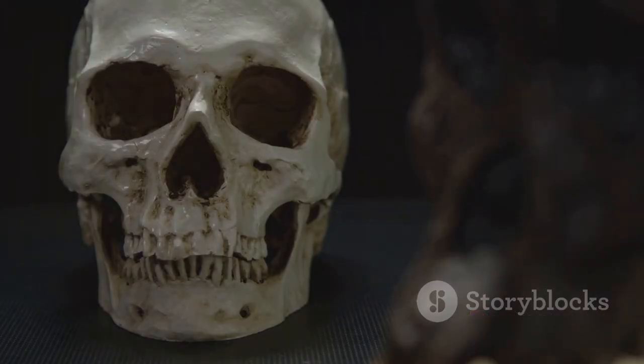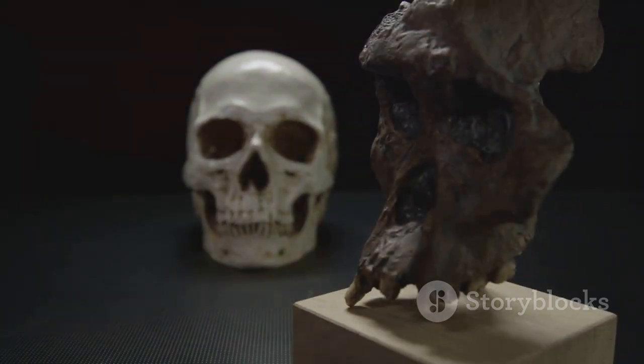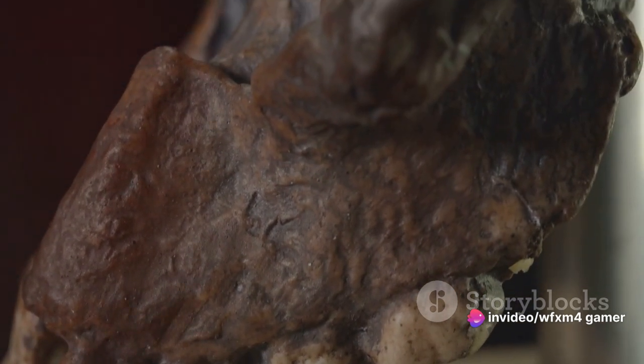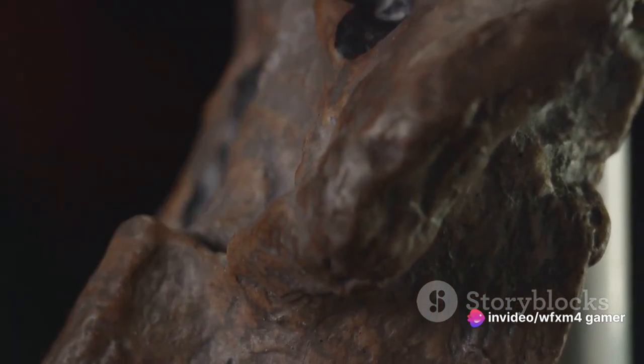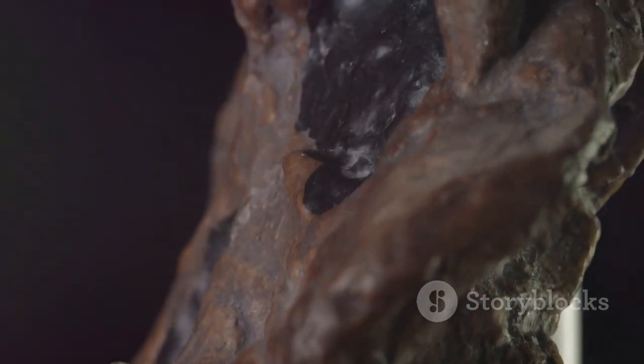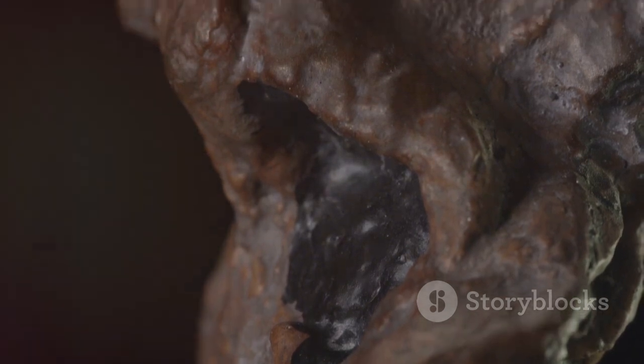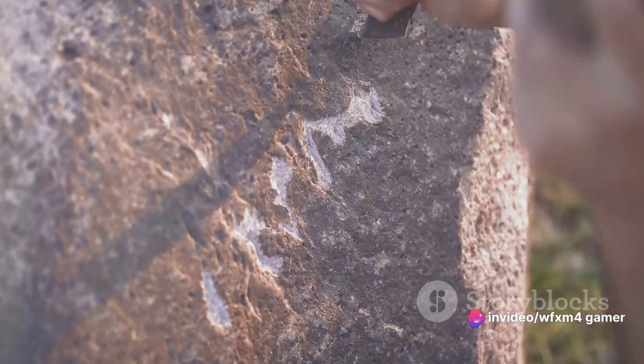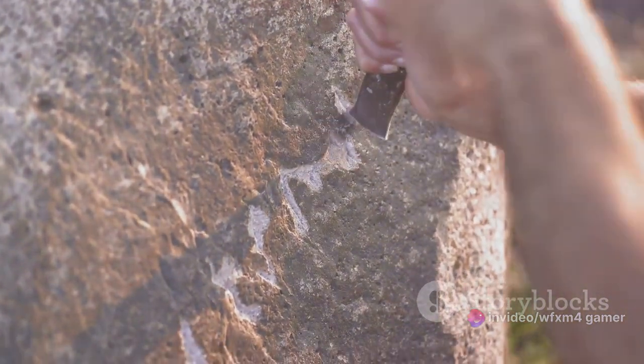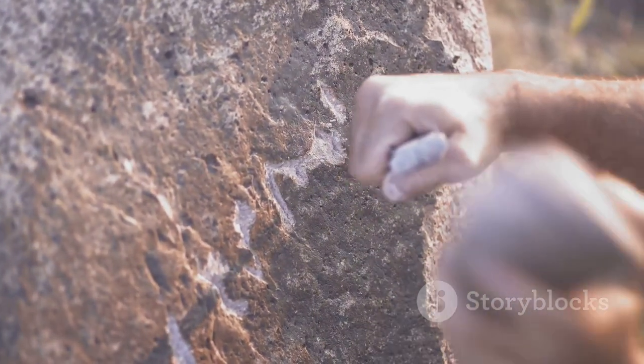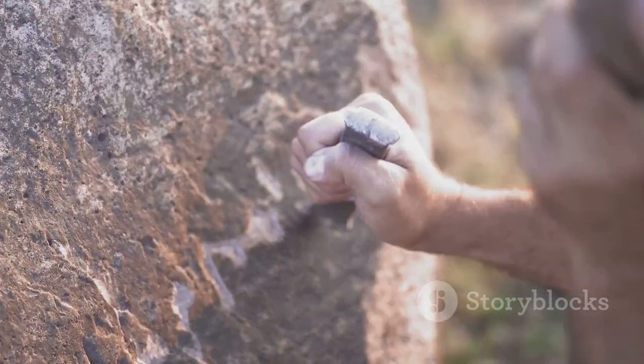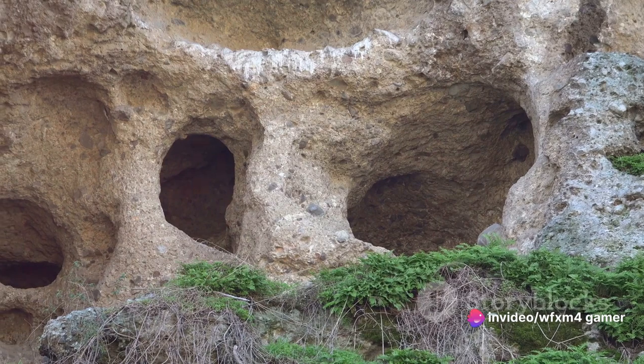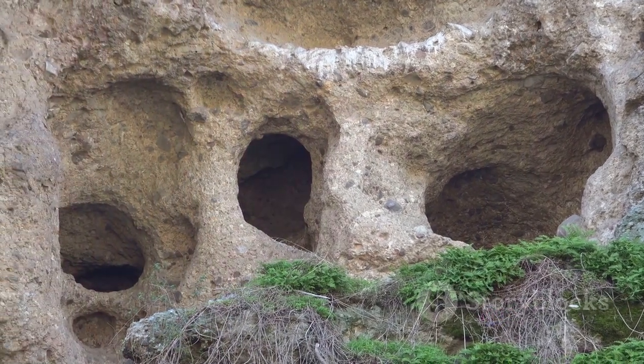The next major milestone in our evolutionary story came with the emergence of Homo erectus, around one and a half million years ago. These early humans were the first to venture out of Africa, colonizing parts of Asia and Europe. They were also the first to use fire, a development that had profound implications for diet, social interaction, and protection from predators. As the millennia rolled on, Homo erectus gave way to the Neanderthals, and eventually, around 300,000 years ago, the first Homo sapiens appeared. Our species, equipped with an unprecedented level of cognitive complexity, began to express themselves through art, develop sophisticated tools, and establish complex social structures.